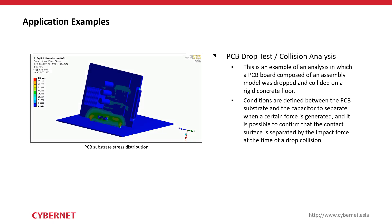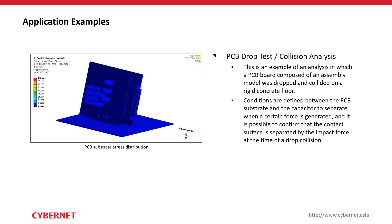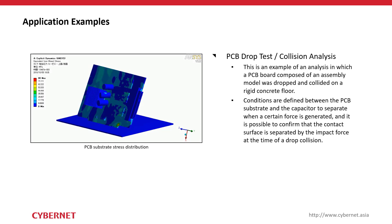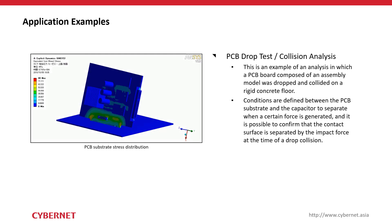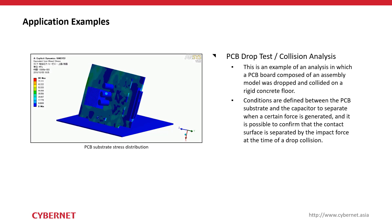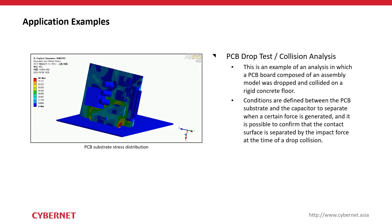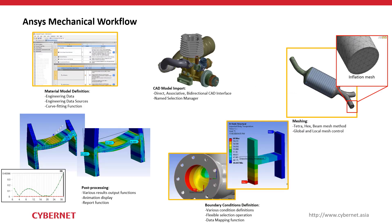Another example is explicit dynamic analysis for PCB drop testing. Here we evaluate stress developed on the PCB, potential indentation, and separation between components and the PCB itself. The type of floor, drop height, and applicable standards can all be set inside ANSYS Mechanical. Contact interactions between components and the PCB can be defined to separate at a certain stress threshold.